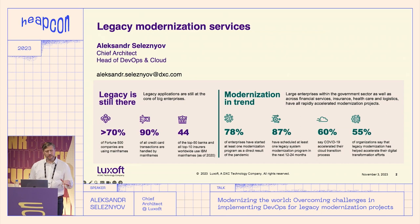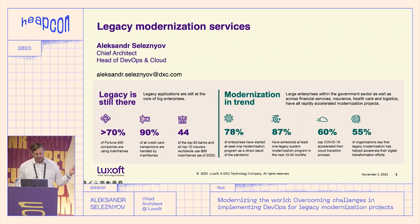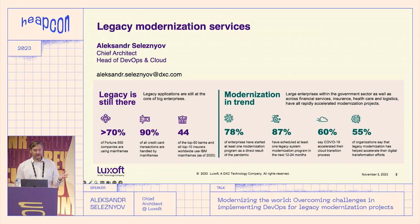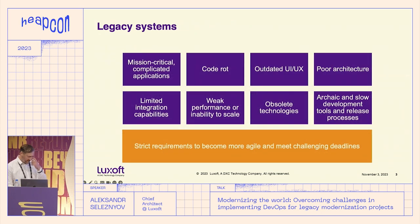This talk is going to be on a higher level. Here are some figures to give you an impression of how much legacy we currently have and how much modernization we are going to have in the upcoming years. Essentially, if you booked tickets to fly here, your requests went to a mainframe like five to six times.